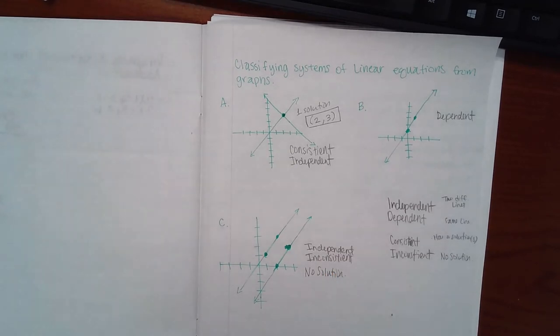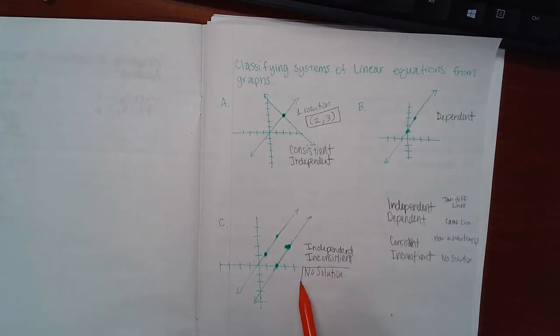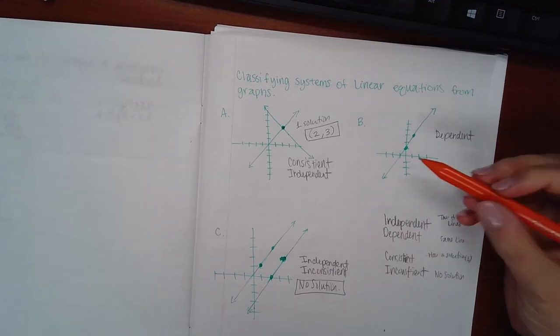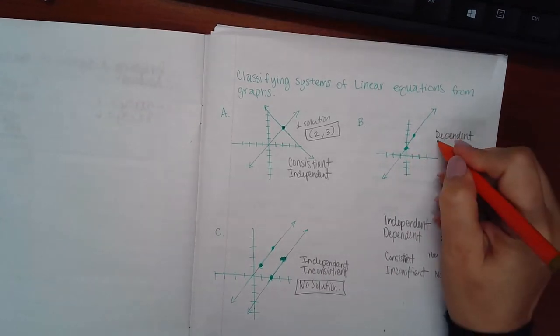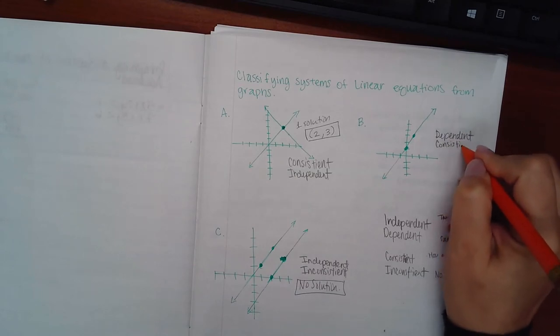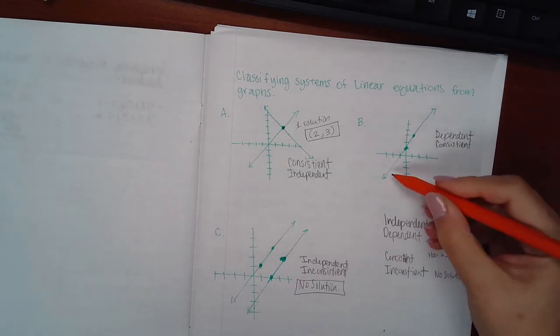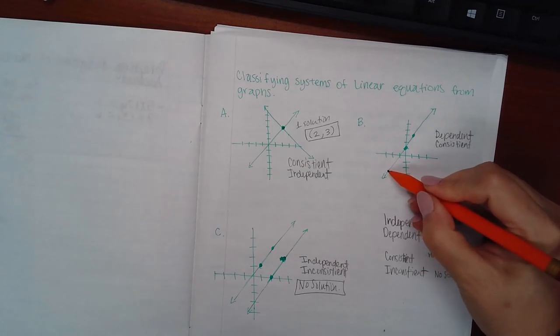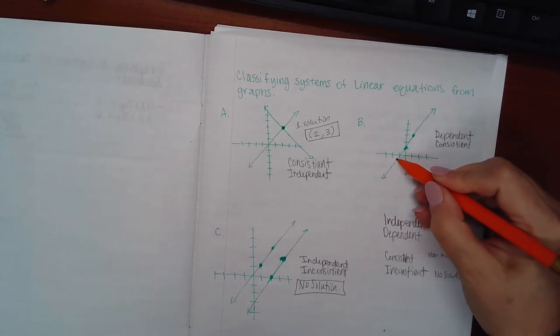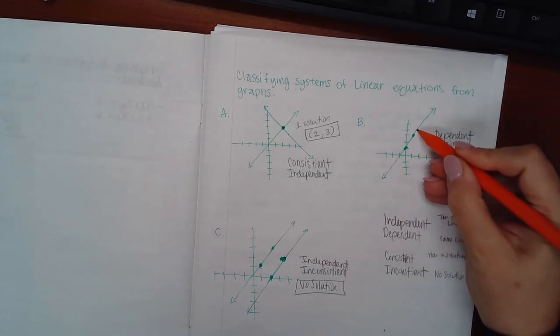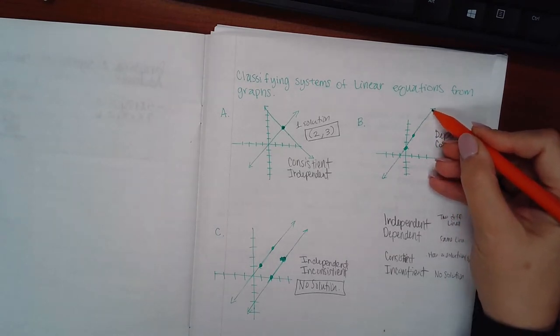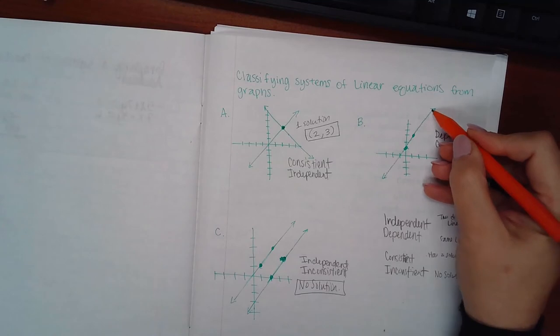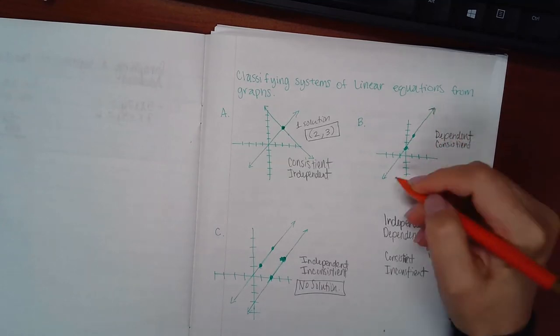The last case, they do touch. There's one right on top of the other, so it is consistent. However, every single point on this line is a solution, so I wouldn't even try to list all of those coordinates because there's an infinite number of them. This is going this way forever and in this direction forever.